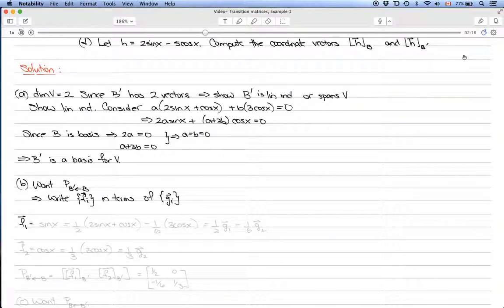Let's go ahead and do that. Note that f_1, which equals sin x, is equal to 1/2 times (2 sin x plus cos x) minus 1/6 times 3 cos x.